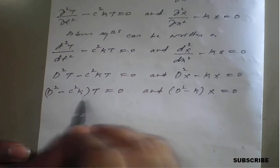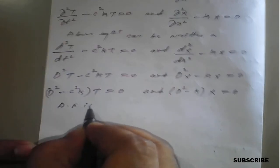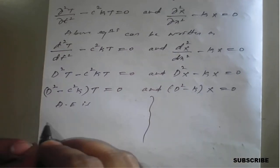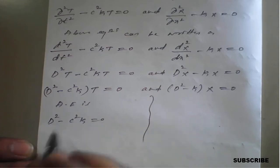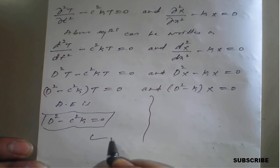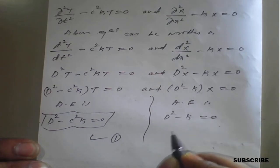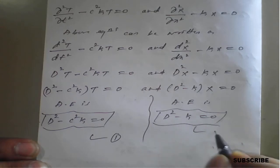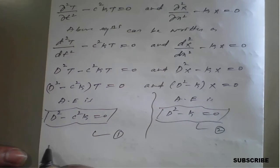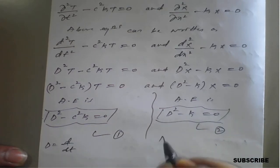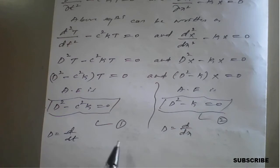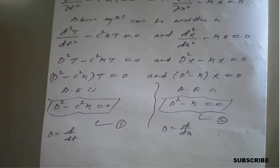We have obtained two equations. The auxiliary equation for equation 1 is D² − C²k = 0, and for equation 2 it is D² − k = 0, where capital D stands for d/dt and d/dx respectively. We find the roots by giving k the values 0, +p², and −p², forming three cases.